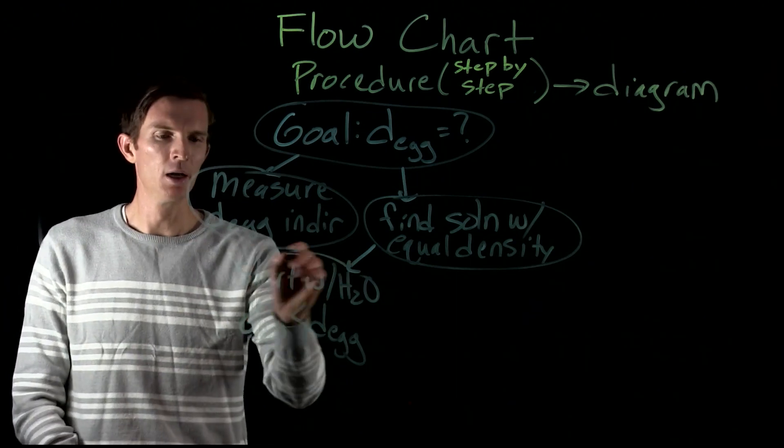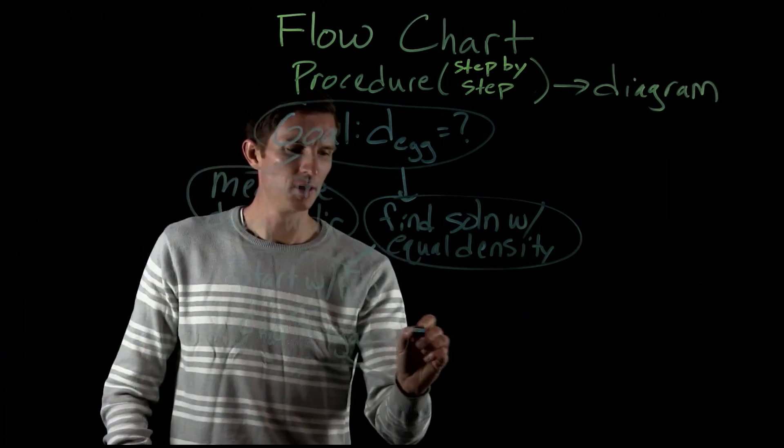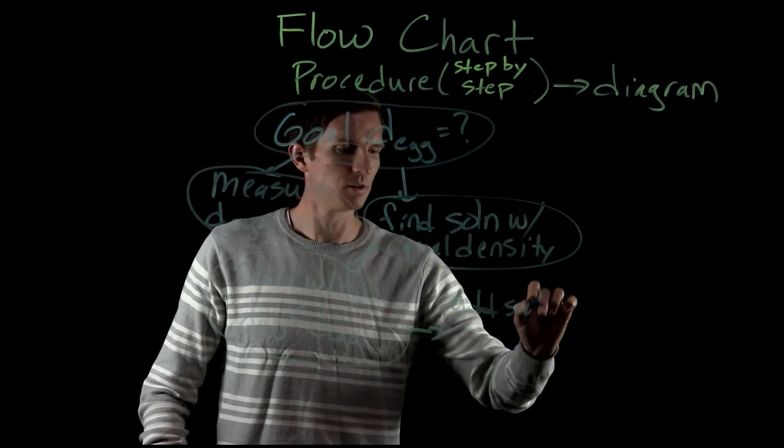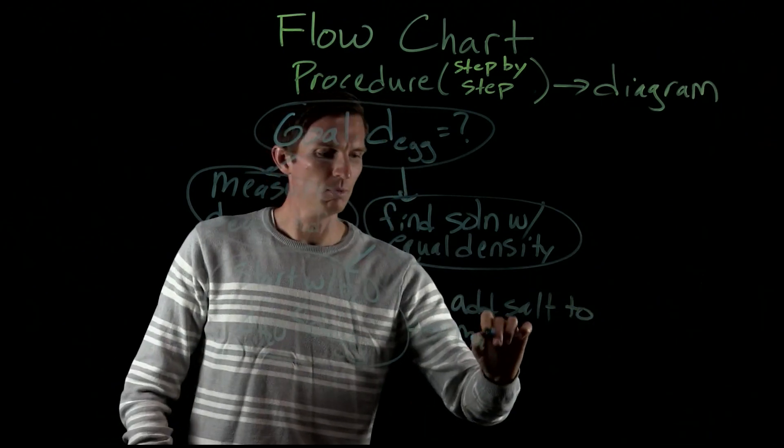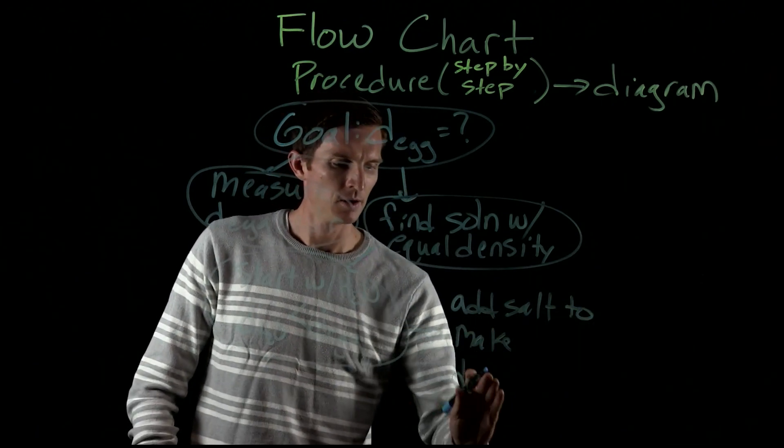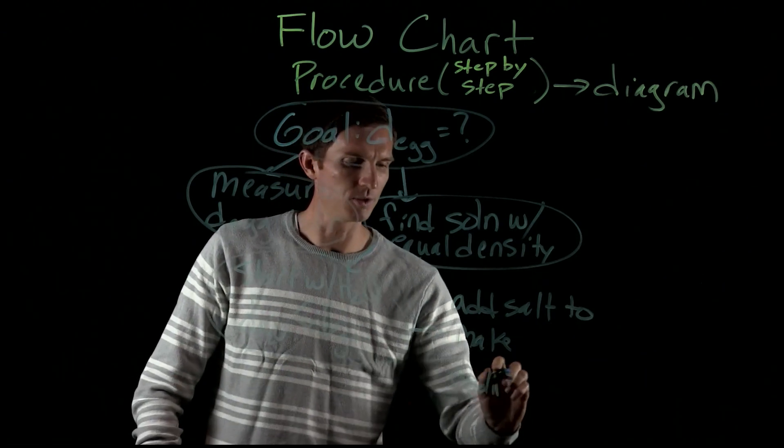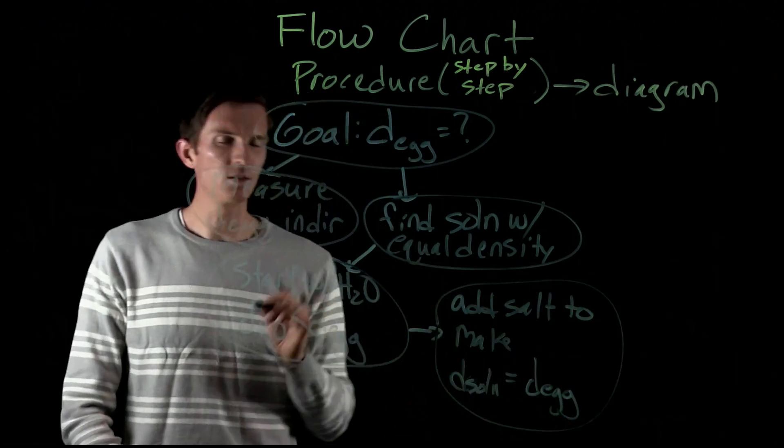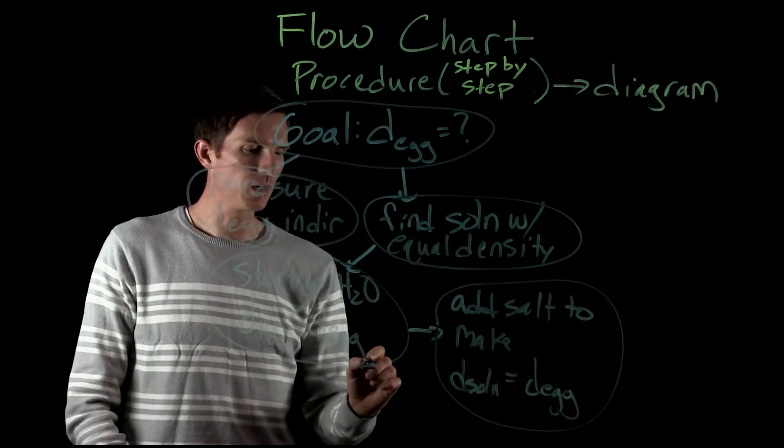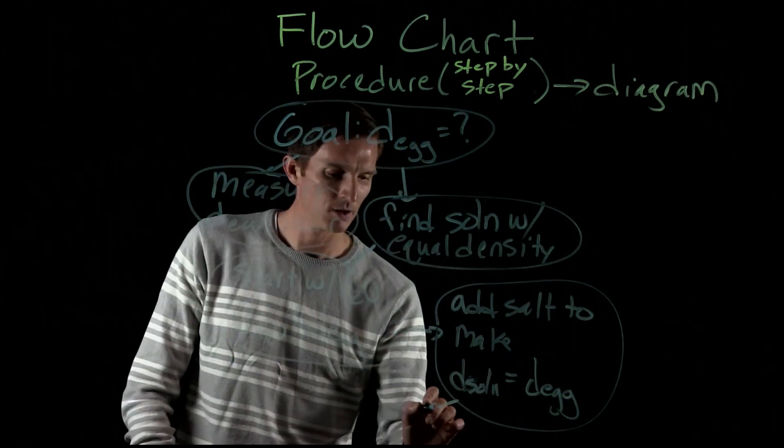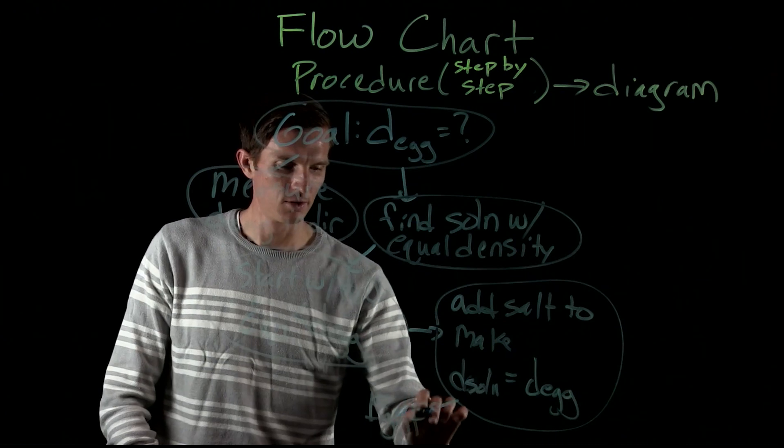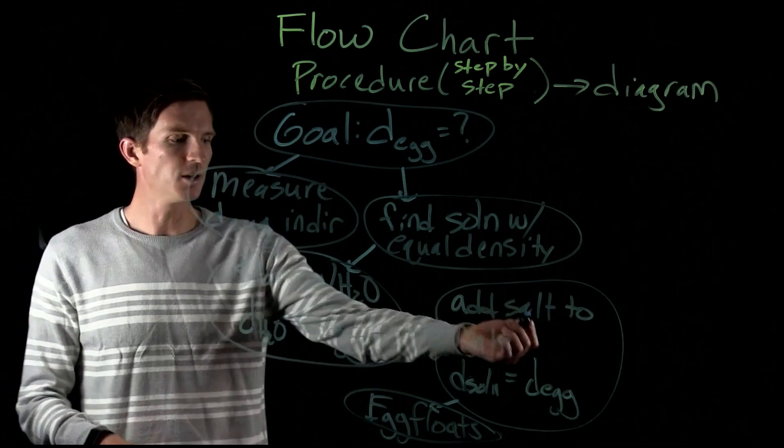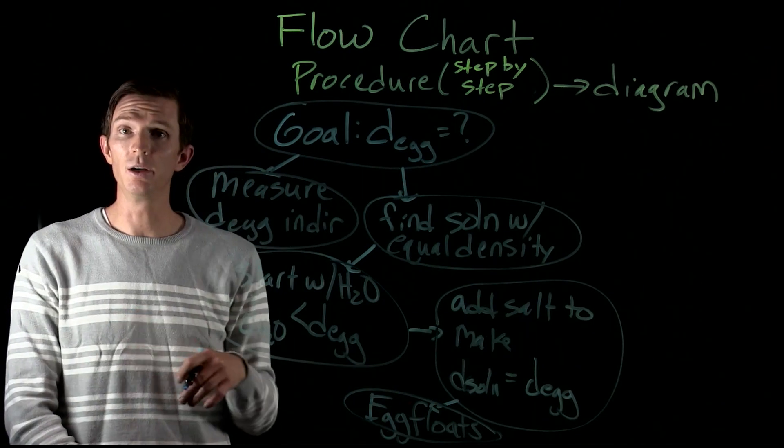We start with that solution and then what we're going to do with that solution is then we are going to add salt to make the density of our solution equal to the density of our egg. So we're going to add salt to that solution and the way that we know that we're going to do that is that here our egg floats. It's going to float in the middle of our solution. So now we know that we've gotten to the place where we made our solution equal to the density.